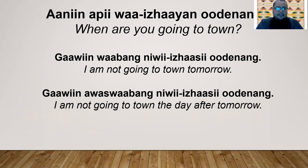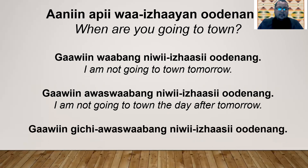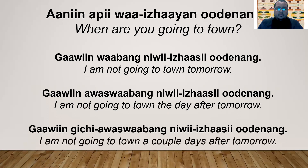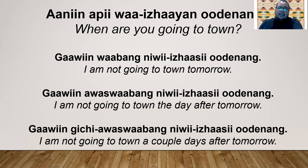'Gawin awaswabang niwi-ijaasi odaanang' — I'm not going to town the day after tomorrow. 'Gawin gichi-awaswabang niwi-ijaasi odaanang' — I'm not going to town a couple days after tomorrow. These are examples of using future tense like in lesson number 41, when we gave a date or time. So 'Aaniin apii wa-izhaayan odaanang?' — when are you going to go to town? 'Gawin gichi-awaswabang niwi-ijaasi odaanang' — I'm not going to go to town a couple days after tomorrow.